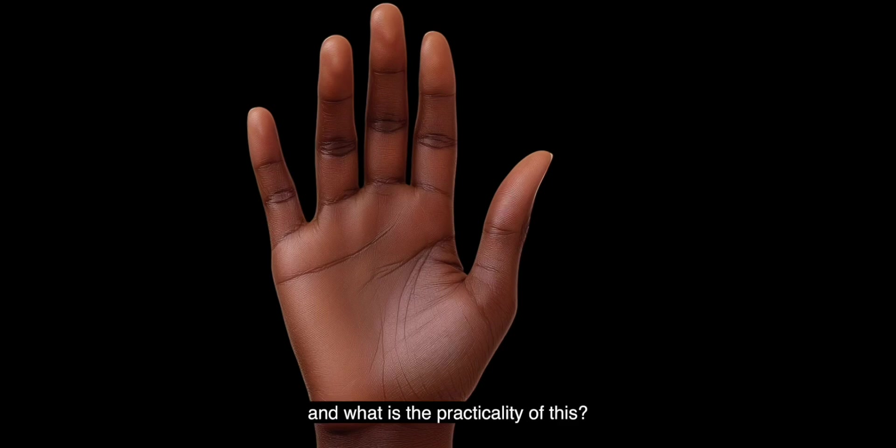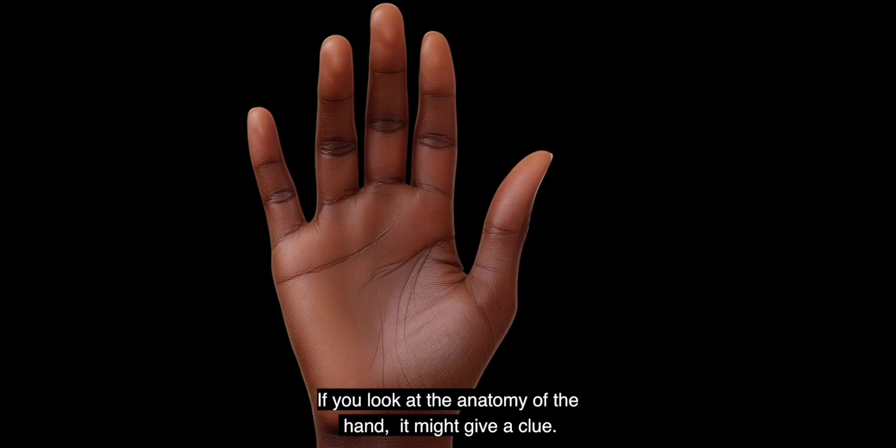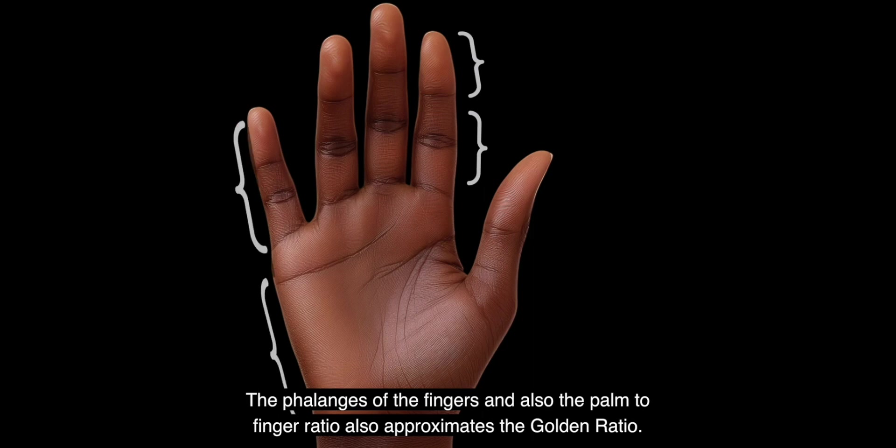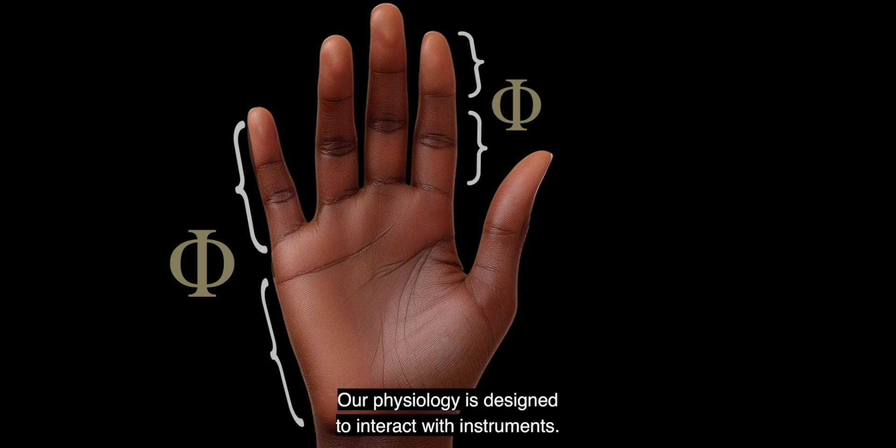And what is the practicality of this? If you look at the anatomy of the hand, it might give a clue. The phalanges of the fingers and also the palm to finger ratio also approximates the golden ratio. Our physiology is designed to interact with instruments.